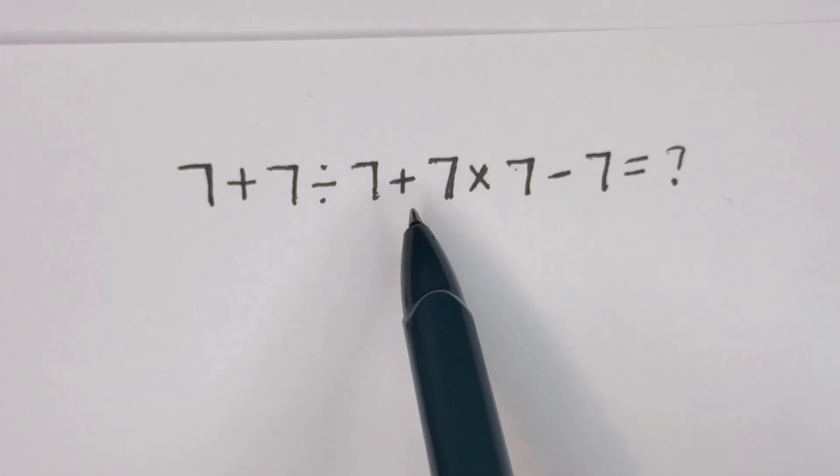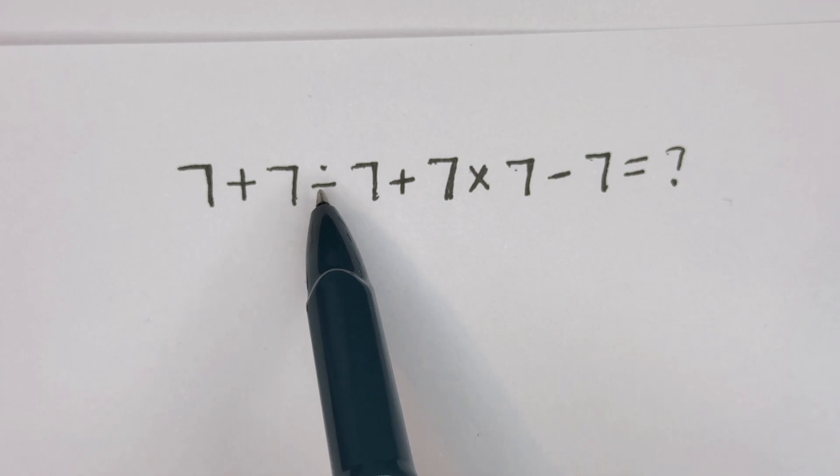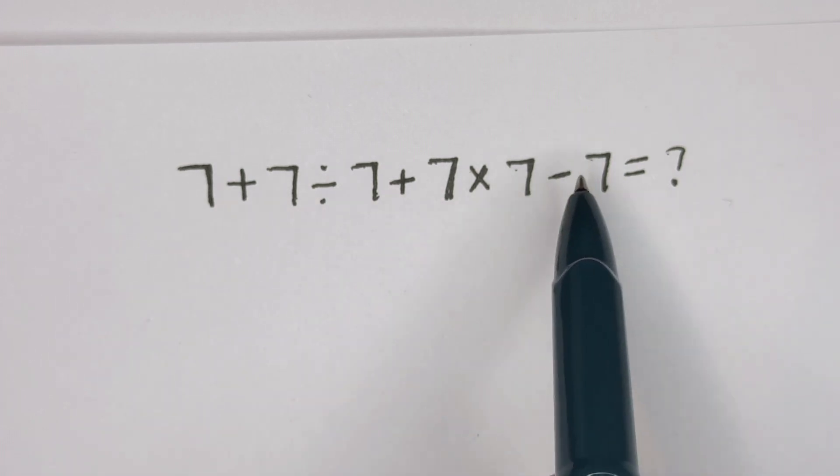Hello. How to simplify this nice math problem without using a calculator: 7 + 7 ÷ 7 + 7 × 7 - 7?